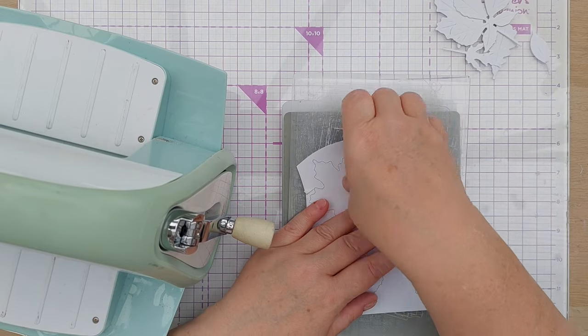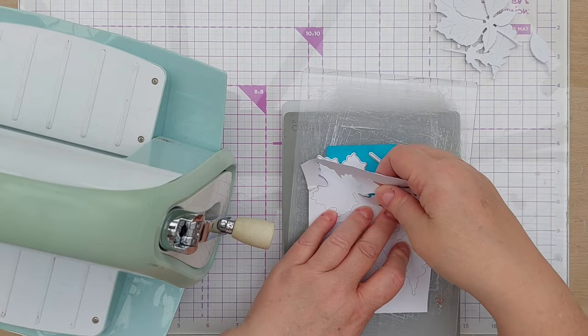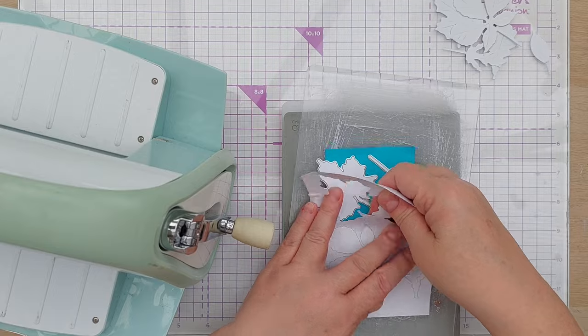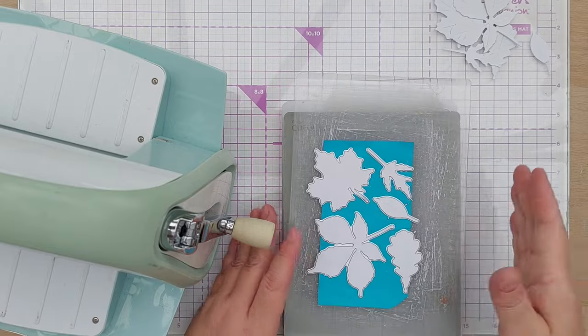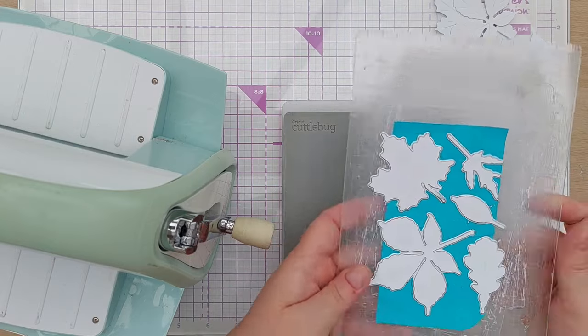So that cuts the leaf shapes and also partially embosses them. You get some of those veiny bits showing up but it's not brilliant.